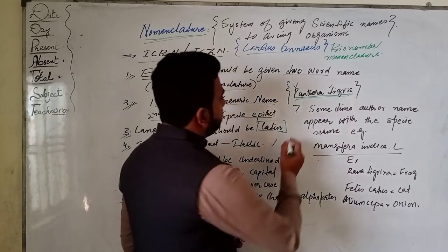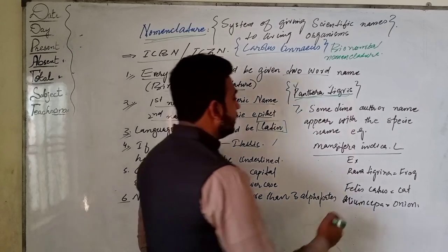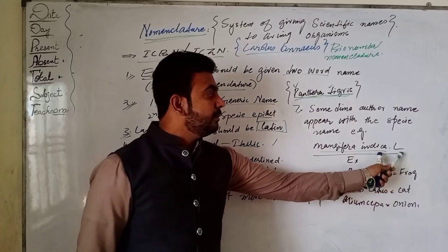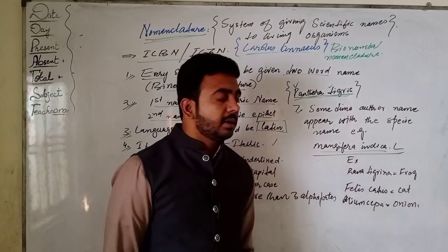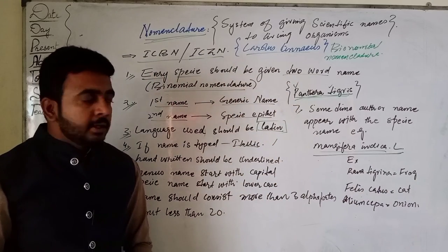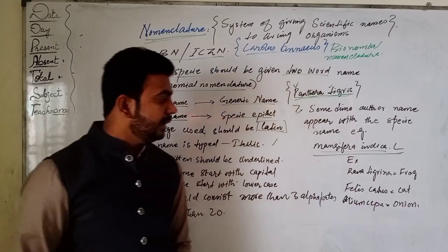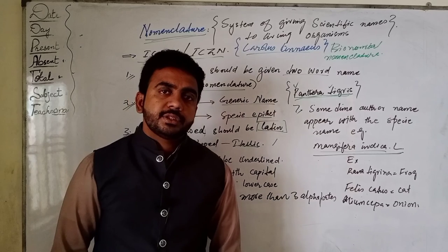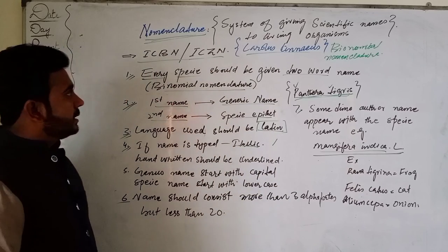The seventh principle is that sometimes the name of the author who described the species is written along with the species name. For example, Mangifera indica L., where 'L' stands for Linnaeus. Some examples of scientific names include Rana tigrina for frog, Felis catus for cat, Allium cepa for onion. Every identified organism has a two-word name — the first is the generic name and the second is the species name.